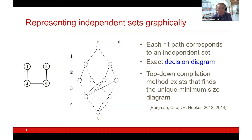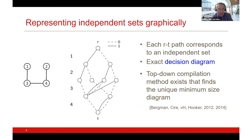For a fixed variable ordering — in this case one, two, three, four — there exists a unique minimum-size exact decision diagram. Decision diagrams have a long history in computer science and this has been very well studied; it is one of the fundamental properties of decision diagrams.